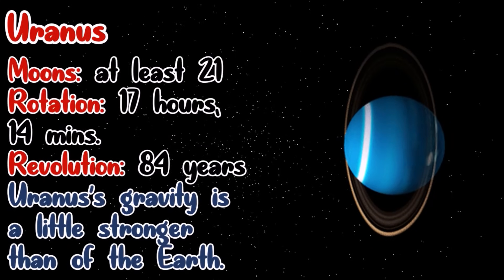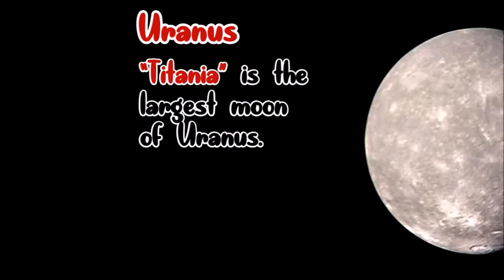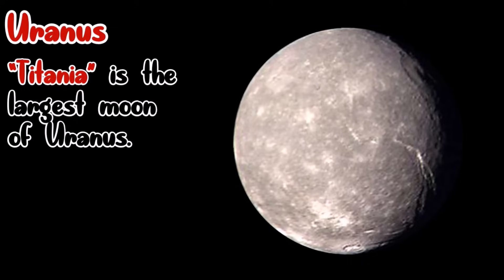Uranus requires 17 hours and 14 minutes in every rotation. And to complete a revolution around the Sun, it requires 84 years. Uranus's gravity is a little stronger than the Earth. It has at least 21 moons. The largest moon of Uranus is called Titania.